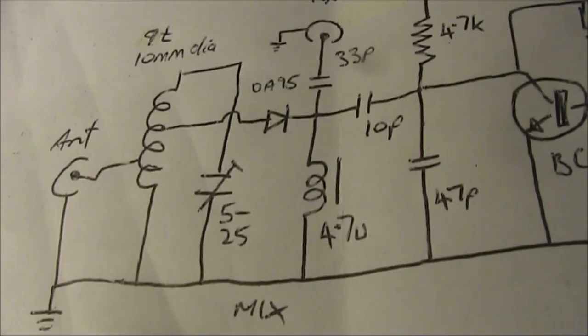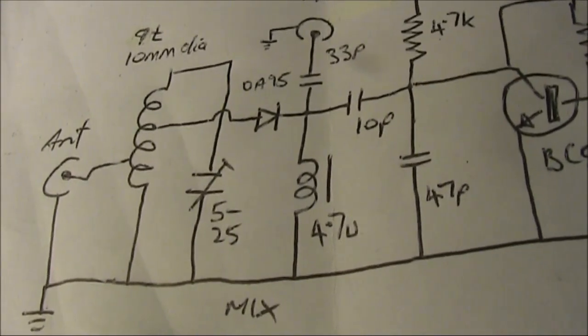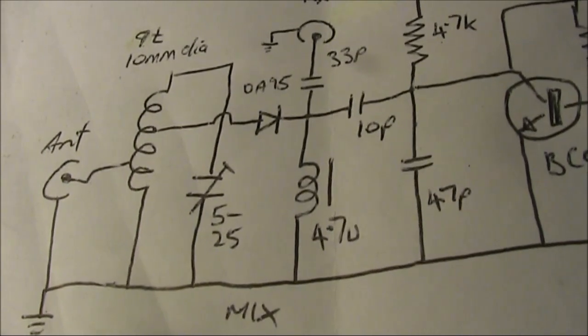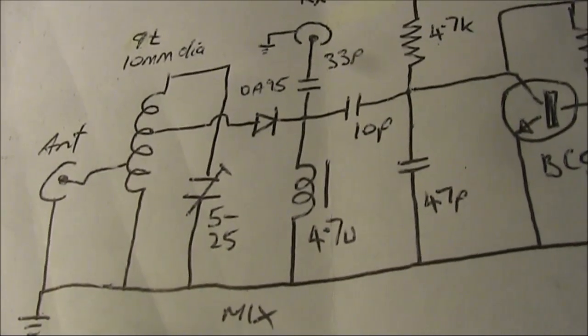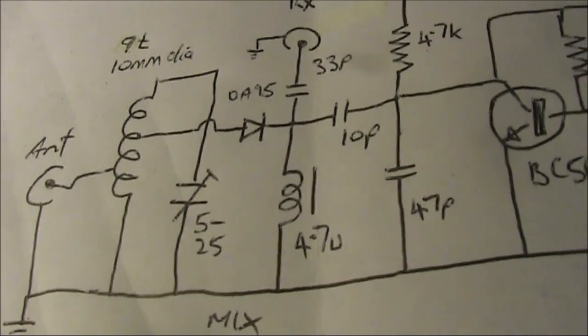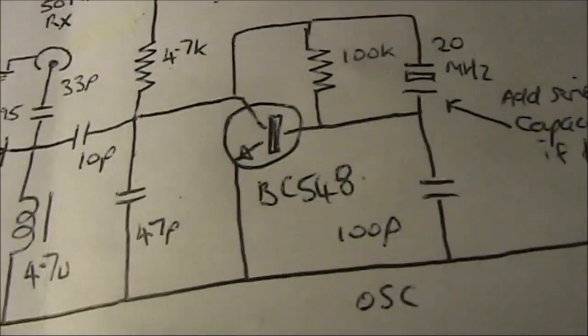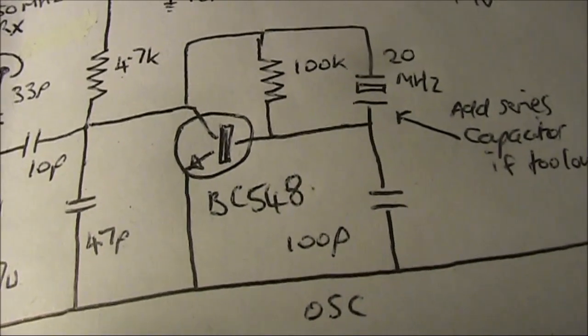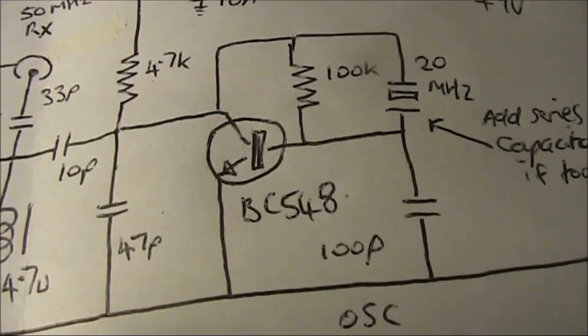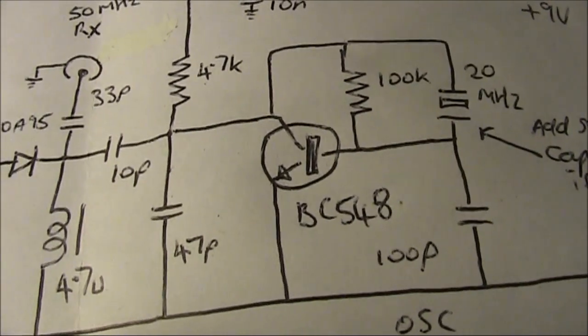One issue you may have with this converter, as it's a very simple circuit, is there's a risk of incoming FM broadcast signals clobbering the front end. That's particularly because, with this oscillator circuit, you may well have a signal at 40MHz appearing on the output.